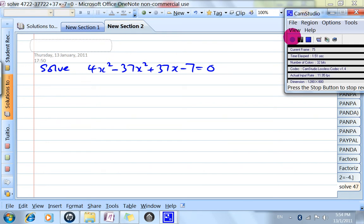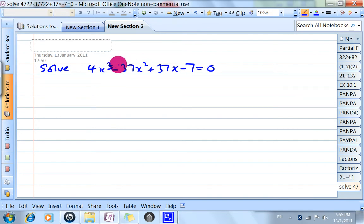In this example, we are going to solve the equation 4x³ - 37x² + 37x - 7 = 0.